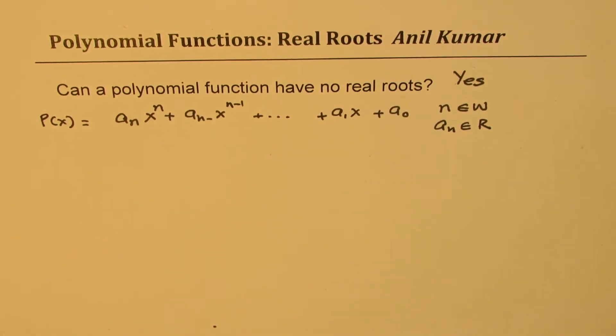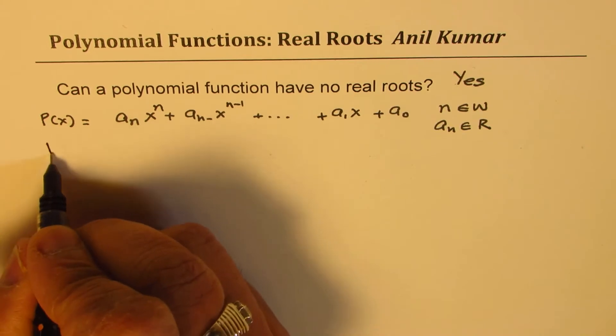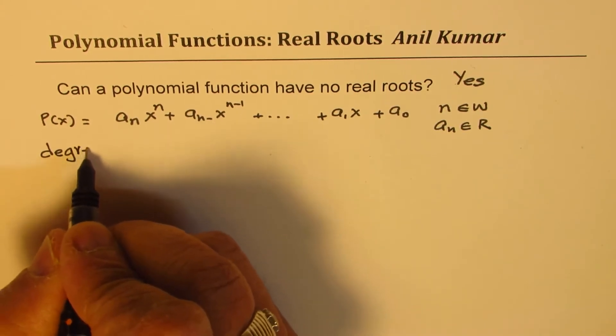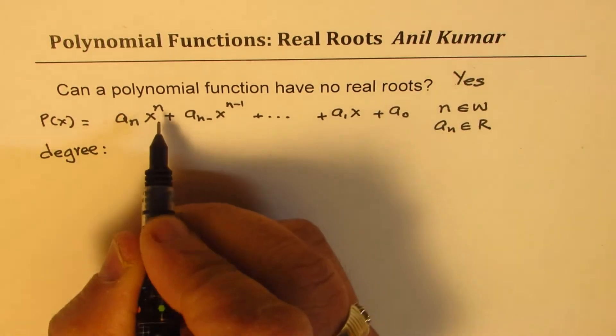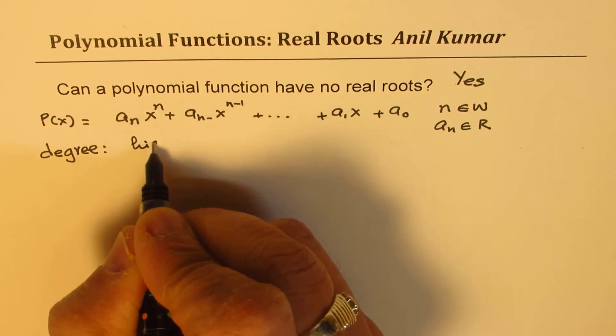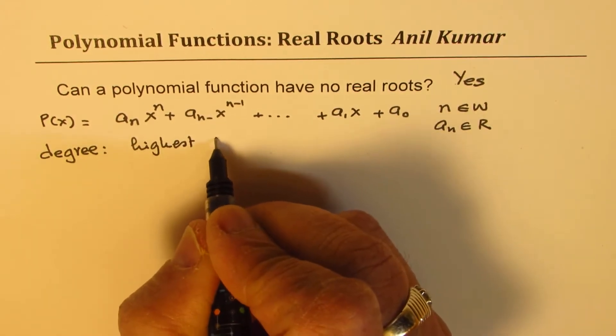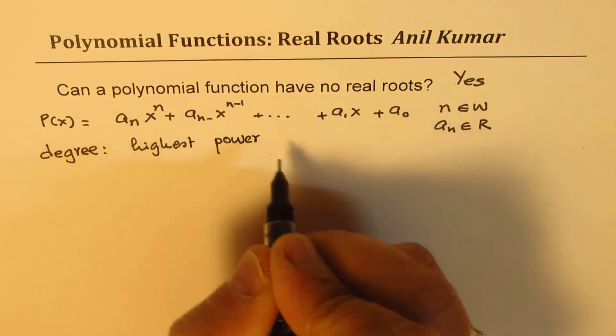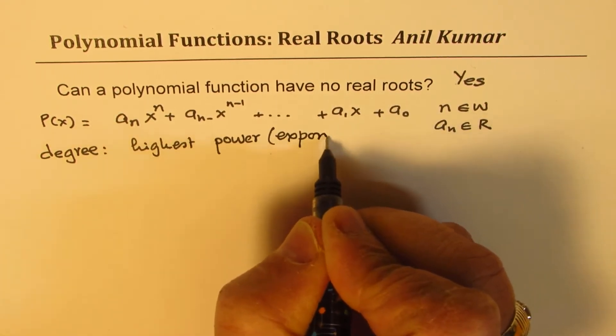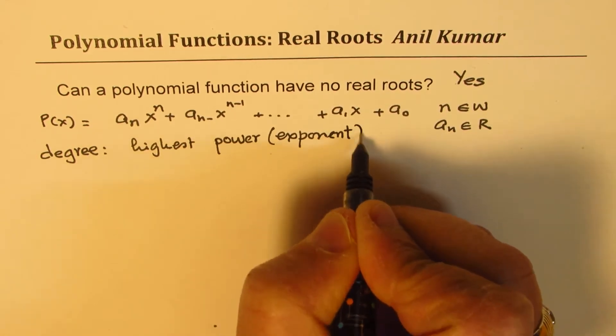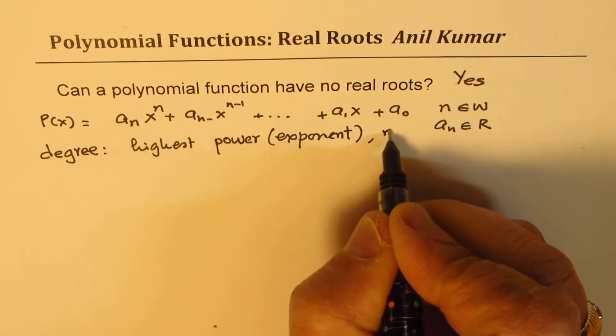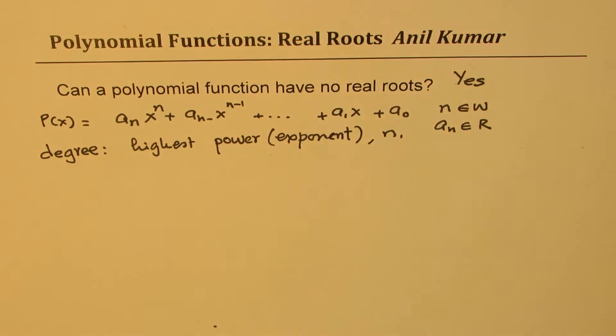Now we define a few more terms. One is degree, which is very important to understand. Degree is the highest power or exponent. So in this case, the degree is n for us. So n is degree.